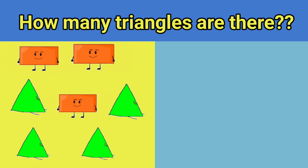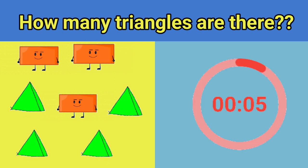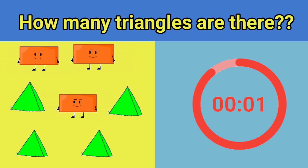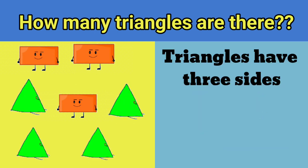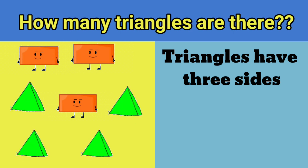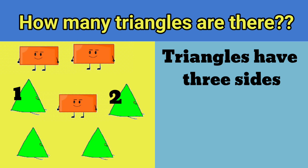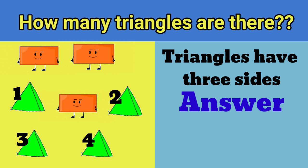How many triangles are there? Triangles have three sides. Let's count: 1, 2, 3, 4. There are four triangles.